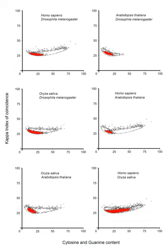When referring to a promoter, some authors actually mean promoter plus operator. For example, the LAC promoter is IPTG-inducible, meaning that besides the LAC promoter, the LAC operator is also present. If the LAC operator were not present, the IPTG would not have an inducible effect. Another example is the TAC promoter system: TAC is actually both a promoter and an operator.